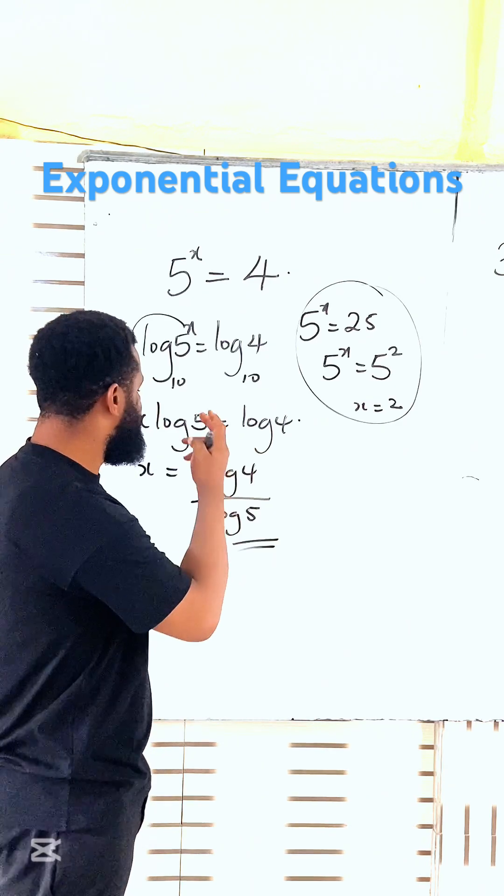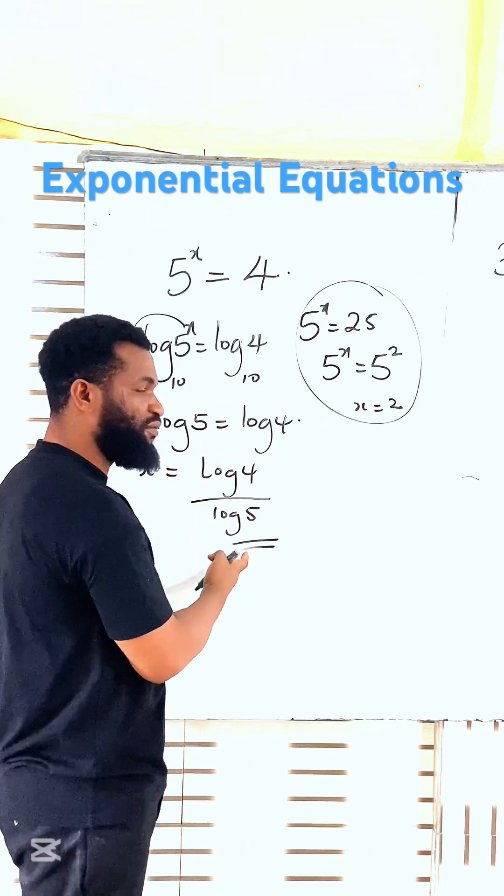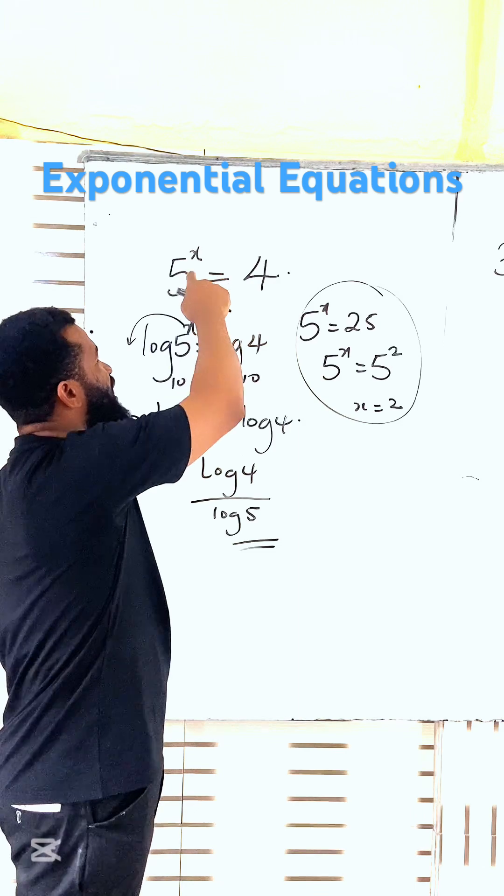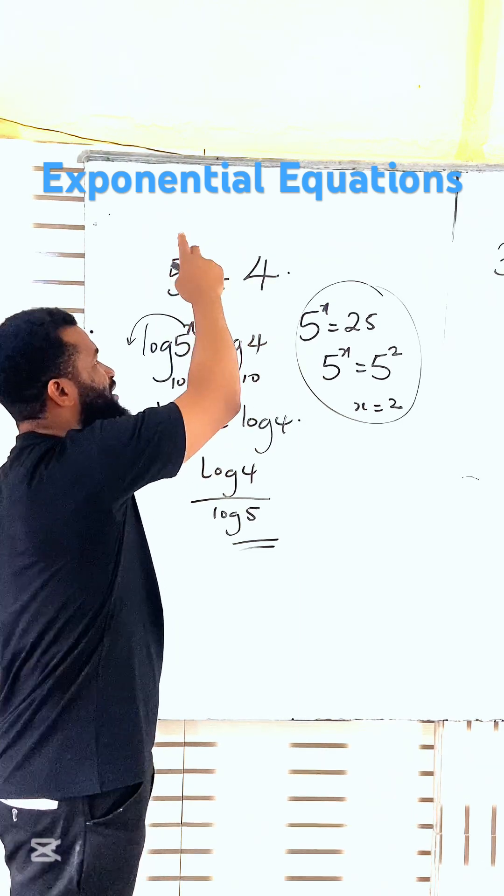So if you use your calculator to find log 4 divided by log 5, whatever you have, if you substitute it here, and the 5 raised power that thing should give you 4.